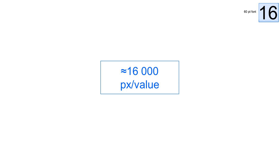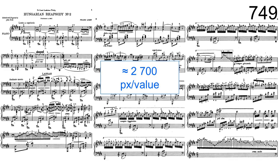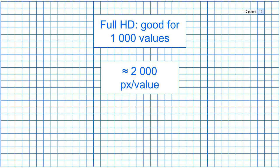When I look at this 60-point font — that's the 16 up there — we have around 16,000 pixels for that value. If we go down to 10-point, which is a normal font size for dashboards, then we only use 2,000 pixels per value. With full HD, we would have room enough for about 1,000 values. These 1,000 little squares on a page would use 2,000 pixels per value, which is very similar to the density musicians use — about 2,700 pixels per note.